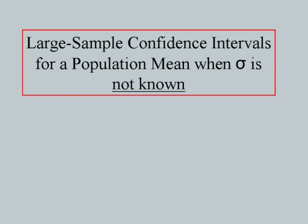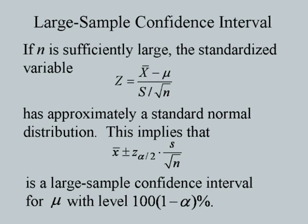For large sample confidence intervals for a population mean when sigma is not known: if n is sufficiently large, the standardized variable Z = (X-bar minus mu) by (S by root n) has approximately a standard normal distribution. This implies that X-bar ± z-alpha/2 times S by root n is a large sample confidence interval for mu with confidence level 100(1 minus alpha)%. Here we stick to the rule of n greater than or equal to 30.